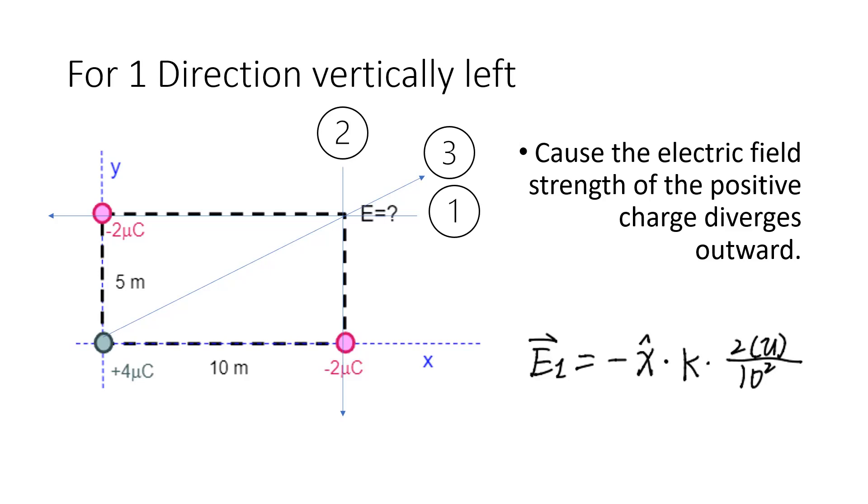Because the electrical field strength formula is E equals KQ over R squared, we put minus 2µC and 10 meters into the formula. In the end, we get E1 equals negative X times K times 2µC over 10 squared.